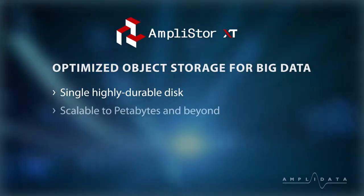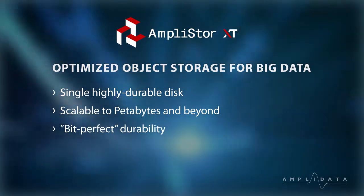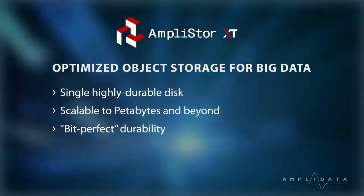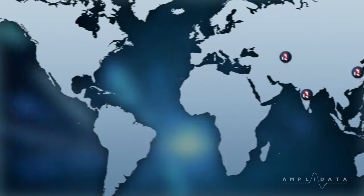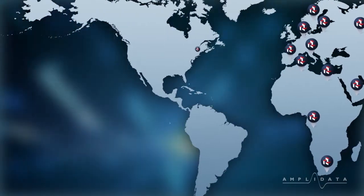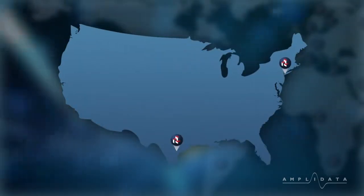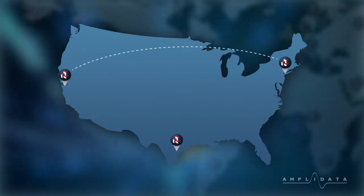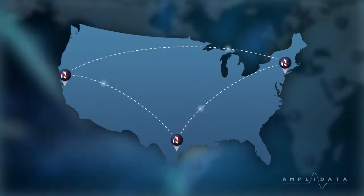The system is scalable to petabytes of data, billions of files and beyond. It provides bit-perfect data durability and integrity for long-term archives. It is delivered on a commodity-based platform for the lowest cost of ownership. Amplistore is geo-spread enabled — a single instance of data can be spread across multiple locations. For example, data can be spread across three separate sites in the U.S. and provide full protection against a complete site failure and assure full data availability in that scenario.